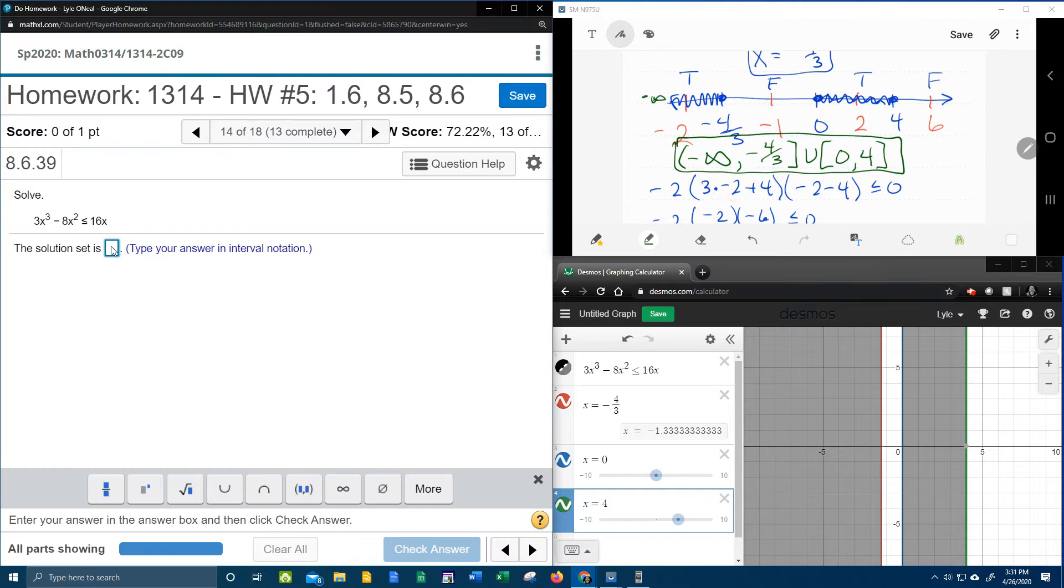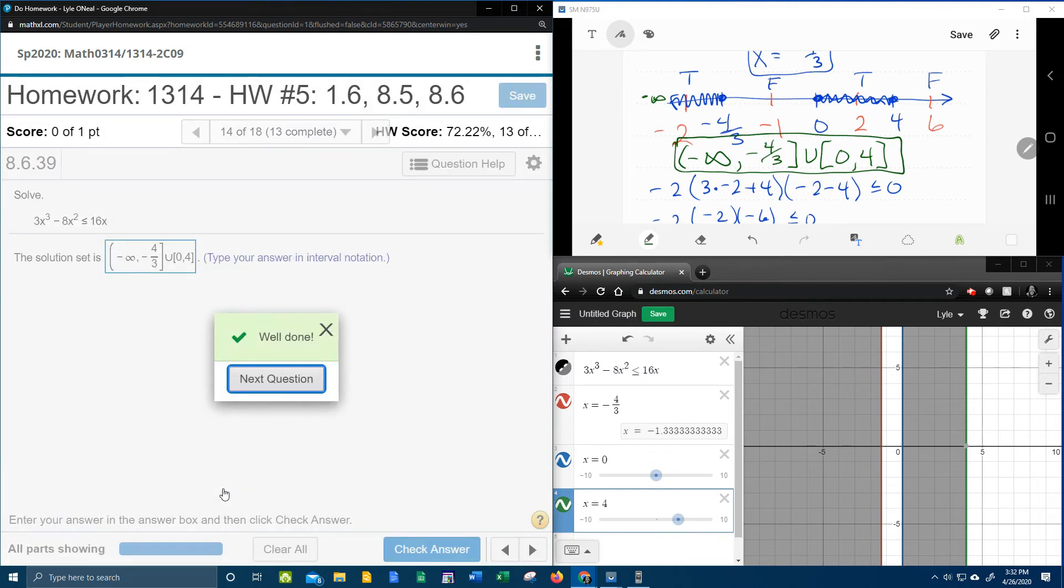And so let's plug that in and see if MyLabMath likes it. Everything from negative infinity to negative 4 thirds, bracket from the keyboard, union, bracket, everything from 0 to 4. And check it.